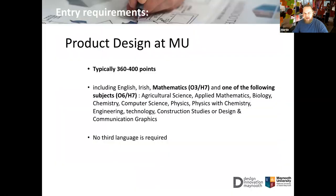In terms of the CAO entry points, it can go up to around 400 points and fluctuates, so just strive to get as many points as you can. Required are maths and one of either a science subject or an applied science subject, such as agricultural science or applied mathematics. Biology, chemistry, the traditional sciences, and computer science are acceptable. Engineering, technology, construction studies, and DCG are also acceptable. No third language is required.